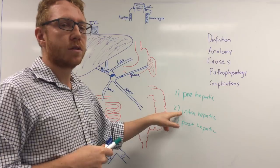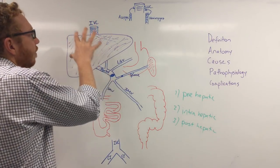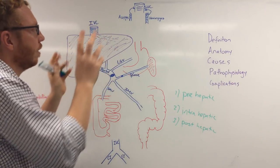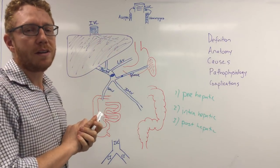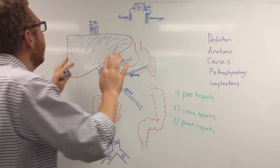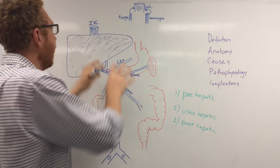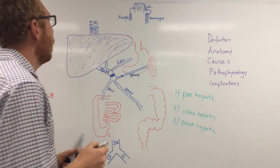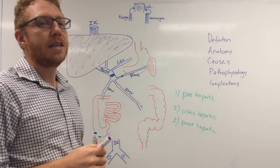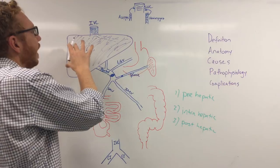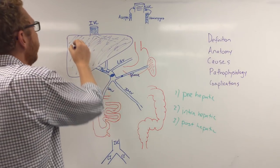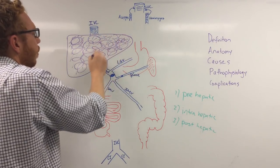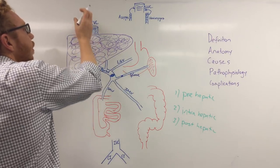Moving to the intra-hepatic causes: within the liver itself, as discussed, you have sinusoids with fenestrations allowing blood to slowly percolate through, be processed by hepatocytes, and then delivered to the inferior vena cava. Any issue with the liver will stop that. By far the biggest intra-hepatic cause is cirrhosis — a fibrotic, stone-like liver — which prevents blood from flowing through and getting processed.